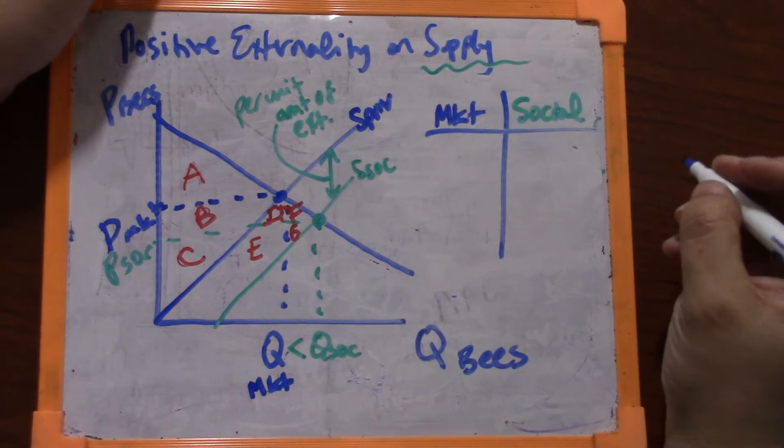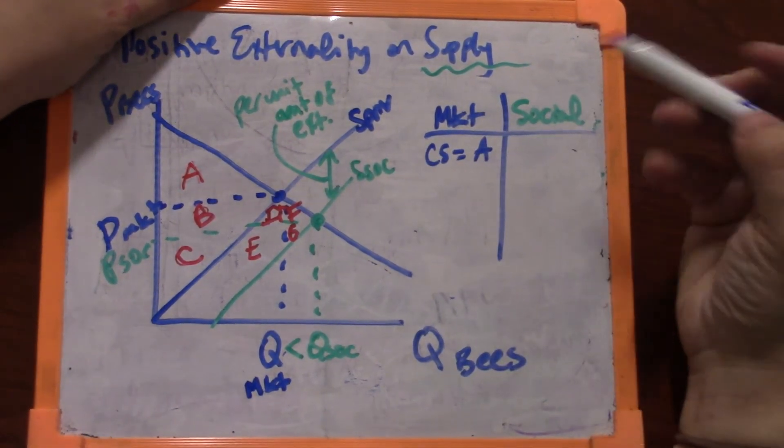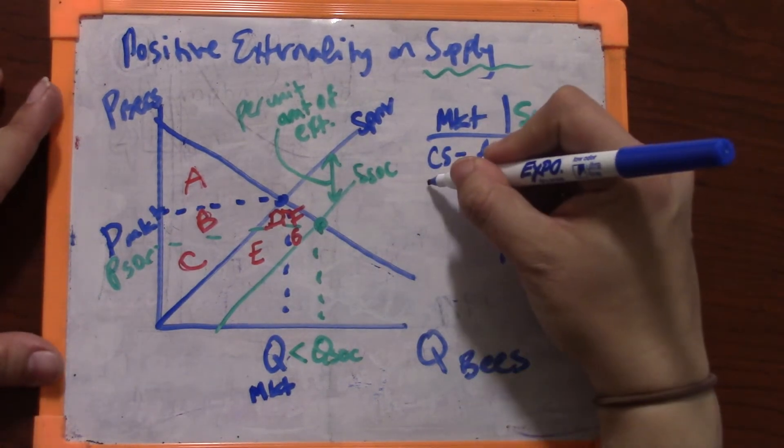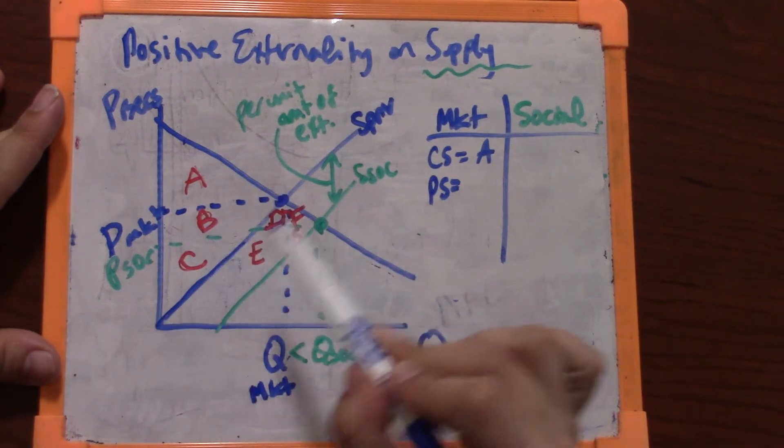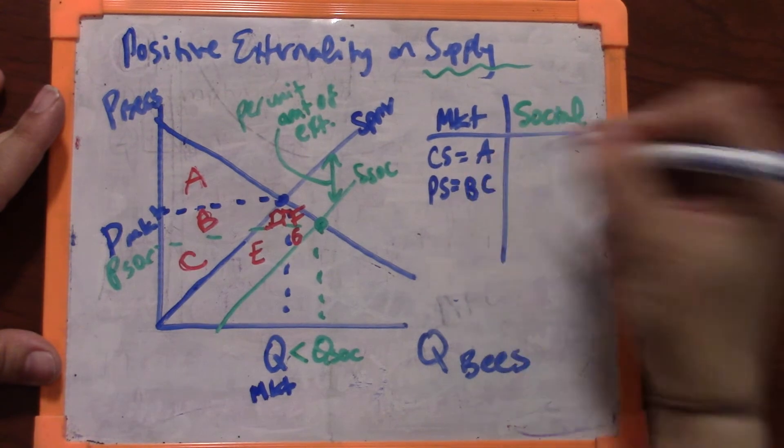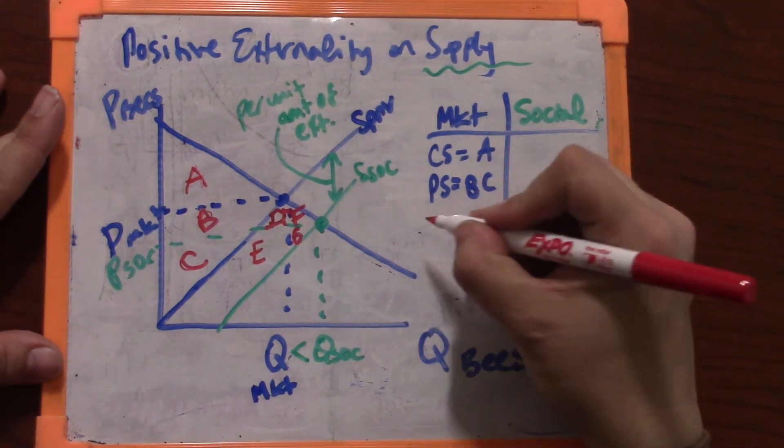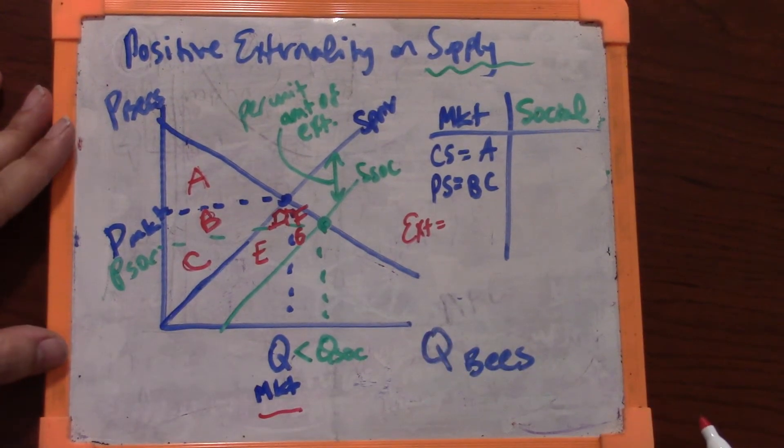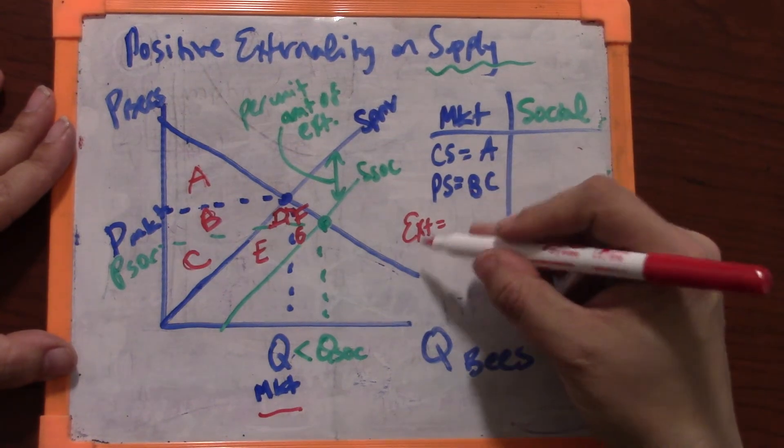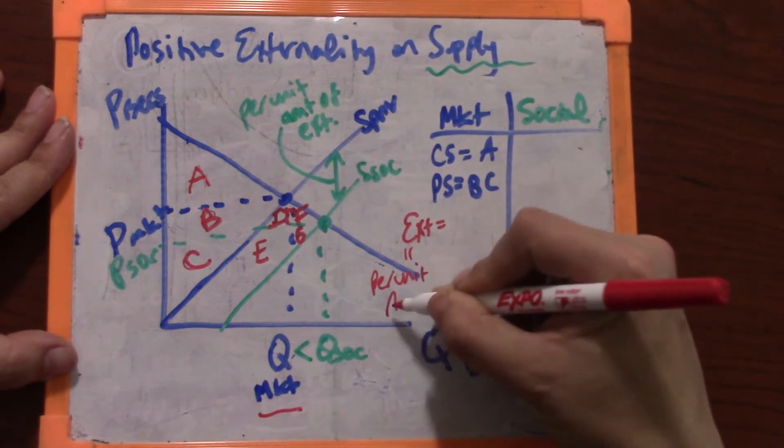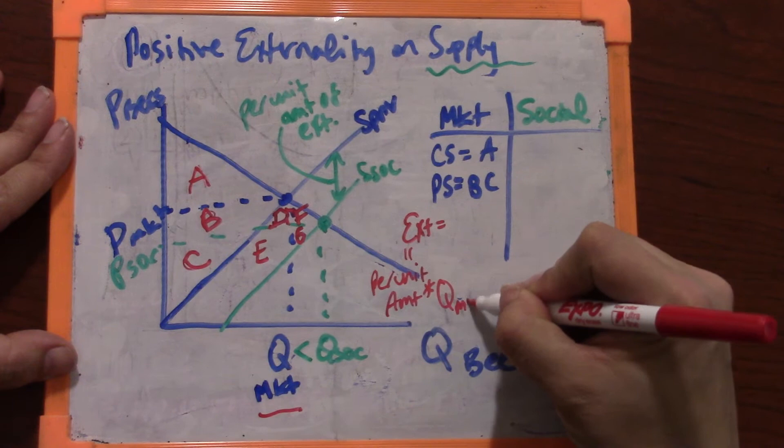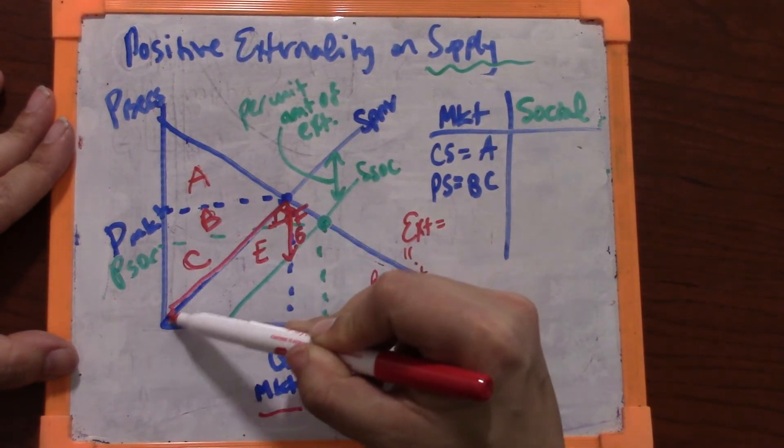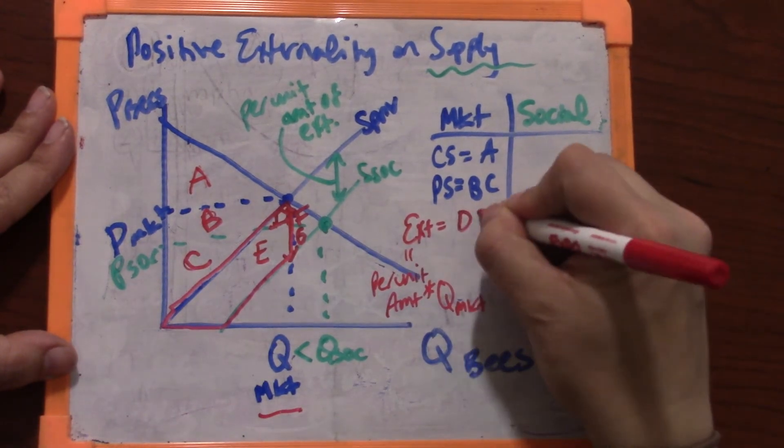At that market price, the blue price, consumers are benefiting by A. That's all the people that would pay much more for bees than they have to pay in the market. At that market price, producers are benefiting by B and C. This is all the beekeepers that would supply bees down here but get to charge up here, and their benefits are there. And then there's a positive externality. It's not going to be negative because the bees at the market quantity are contributing to the social well-being. The amount of the externality is always going to be the per unit amount multiplied by the quantity.